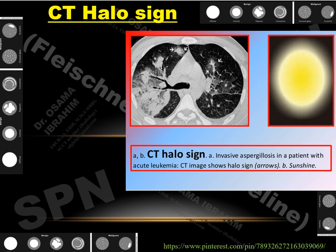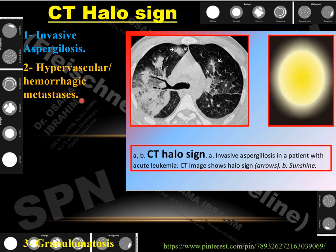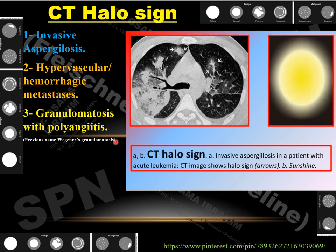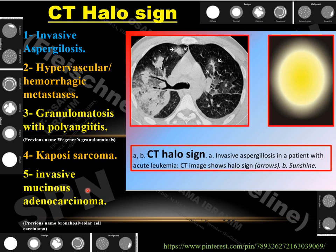The CT halo sign: a solid pulmonary nodule surrounded by ground glass opacity is highly suspicious for malignancy. The differential diagnosis for CT halo sign includes invasive aspergillosis (in immunocompromised patients), hypervascular or hemorrhagic metastasis, granulomatosis with polyangiitis (formerly Wegener's granulomatosis), Kaposi sarcoma, and invasive mucinous adenocarcinoma (formerly bronchoalveolar cell carcinoma). Of these five causes, three are malignant, so the CT halo sign should be carefully evaluated.